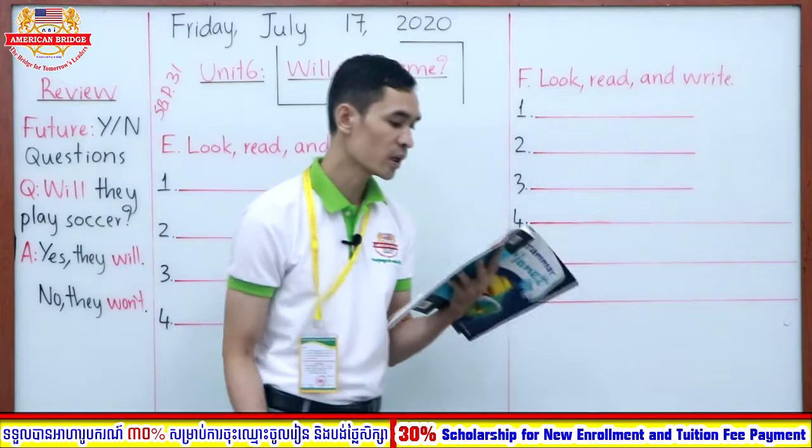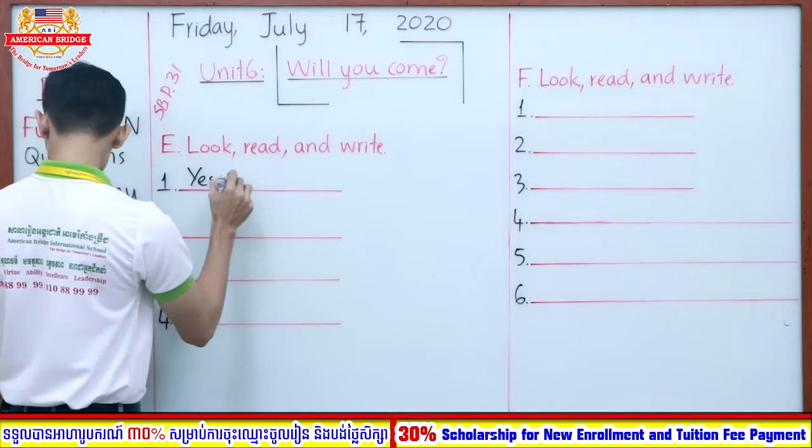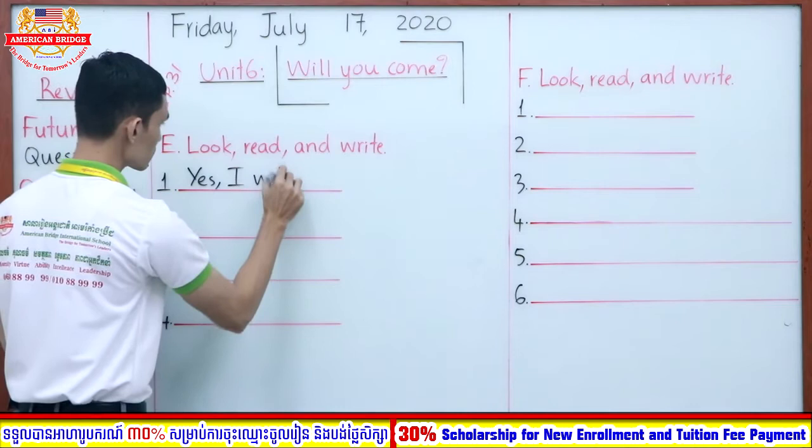You have to complete some questions and some answers. Now look at number one — number one is given as an example. 'Will you swim? Yes, I will.' Very good. So number one is given as an example: 'Will you swim? Yes, I will.'